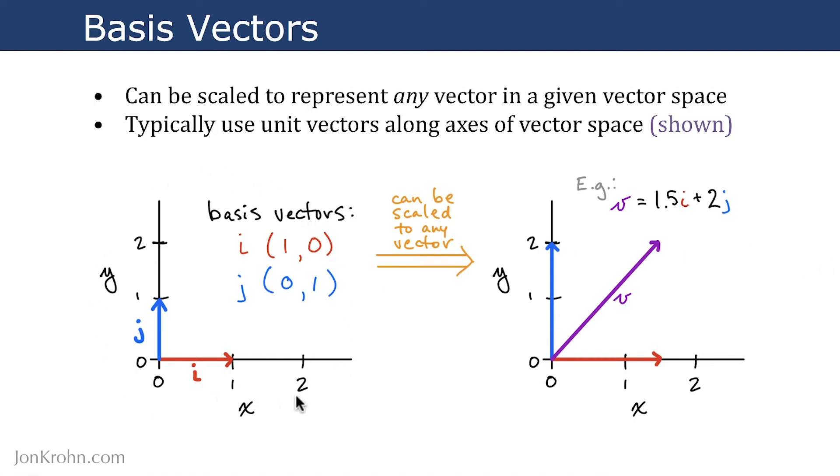So if we have a two-dimensional vector space, we can represent it with two axes, x and y, and the typical basis vectors would be unit vectors, like these, i and j. So we have one unit vector, i, stretching from the origin (0, 0) to this coordinate (1, 0), x is equal to 1, y is equal to 0. And then a second vector, j, which stretches from the origin to (0, 1), where x is equal to 0 and y is equal to 1.